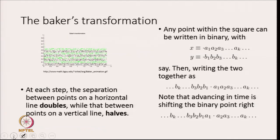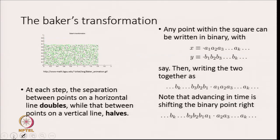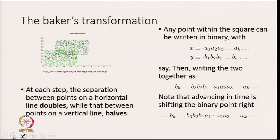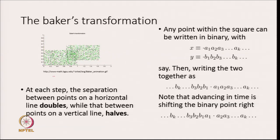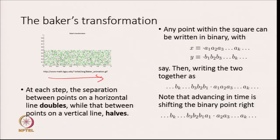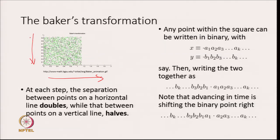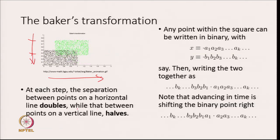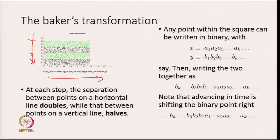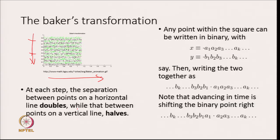At each step, the separation between points on horizontal lines doubles because we are stretching out by a factor of 2, while points on a vertical line get their distance decreased — it becomes a half. So points in the vertical direction come closer together and in the horizontal direction they spread far apart.